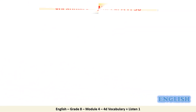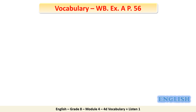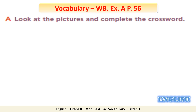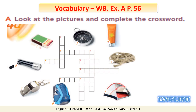We have another vocabulary practice, so kindly open your workbook page 56 and do Exercise A. Look at the pictures and complete the quiz word, then check your answers with your teacher. Answers: 1. Matches. 2. Compass. 3. Sunscreen. 4. Rope. 5. Tent. 6. Backpack. 7. Whistle. 8. Torch.